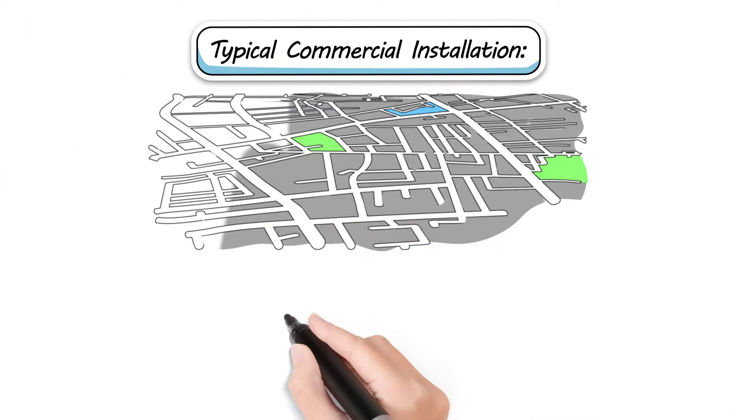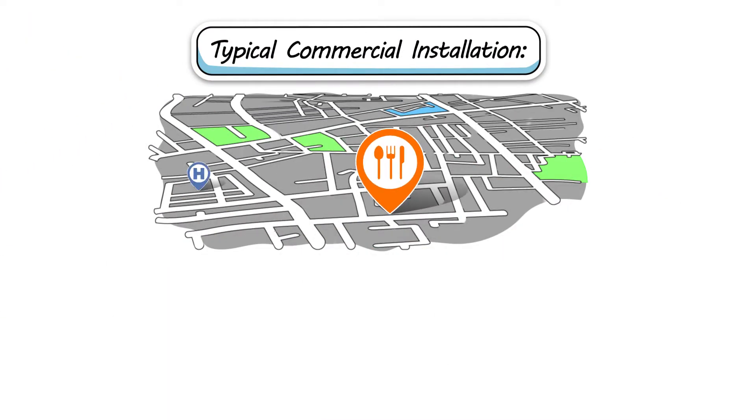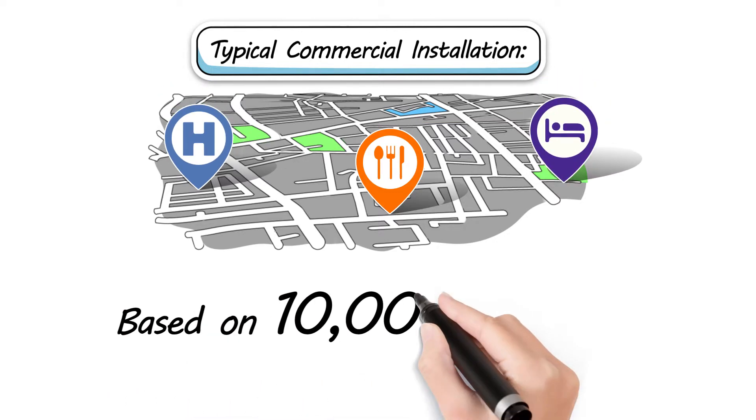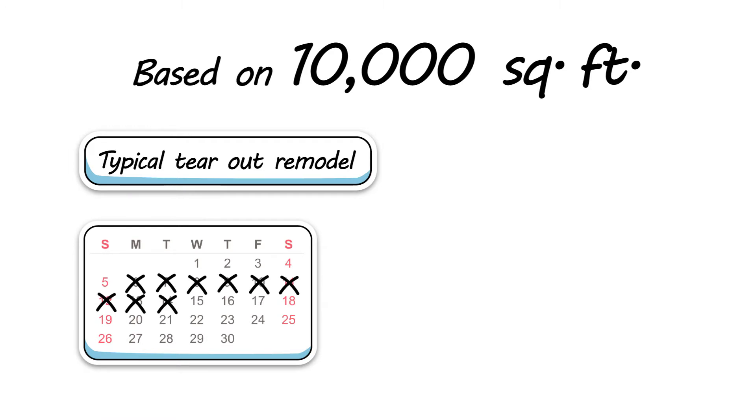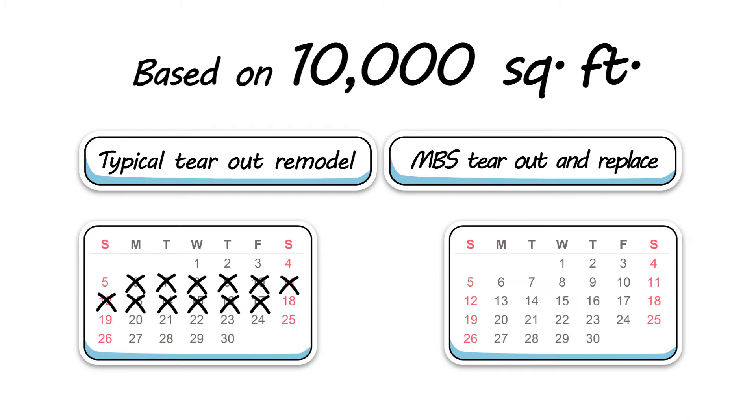A typical commercial installation, restaurant, hospital, hospitality based on 10,000 square feet, typical tear out remodel requires a 10 to 12 day cycle. MBS tear out and replace is a 2 day cycle, 1 tear, 1 replace.